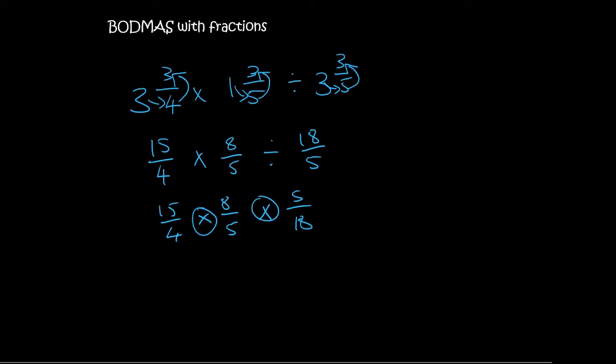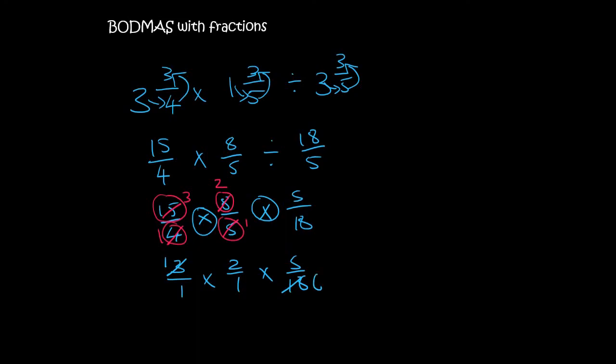So for example, if I look at the 4 and the 8, 4 goes into itself once and 4 goes into 8 twice. If I look at this 15 and this 5, 5 goes into itself once and 5 goes into 15 three times. And that's about all we can do. Oh no, we could go further. Let me just rewrite what we have so far. So we have a 3 over 1 times by 2 over 1 times by 5 over 18. We can do even better. 3 goes into itself once and 3 goes into 18 six times.